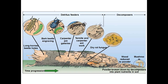Detritivores and decomposers are another example of consumption. Detritivores are organisms that eat detritus, or dead and non-living particles — long-horned beetles and termites are examples feeding off dead parts of a tree. Decomposers differ from detritivores in that when they consume living flesh, they recycle that material and deposit it back into the environment, generally by leaching it into the soil. Mushrooms are an example of a decomposer that breaks down plant tissue and recycles those nutrients back into the soil.